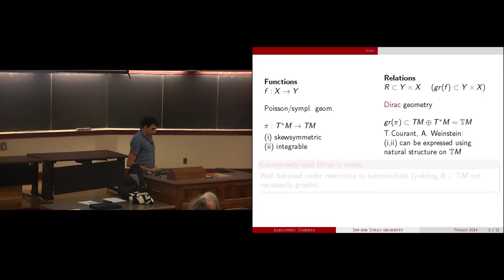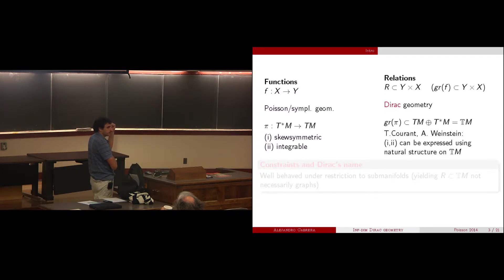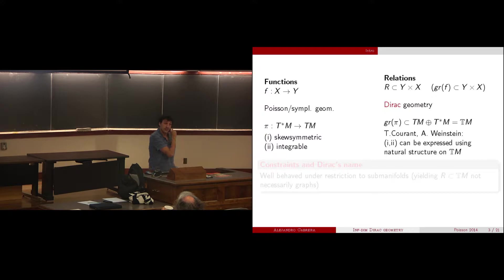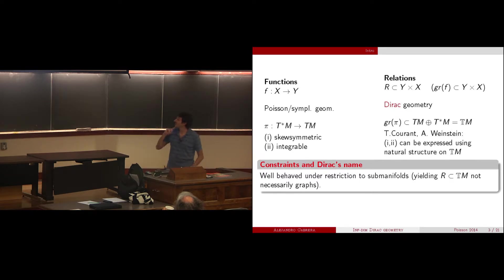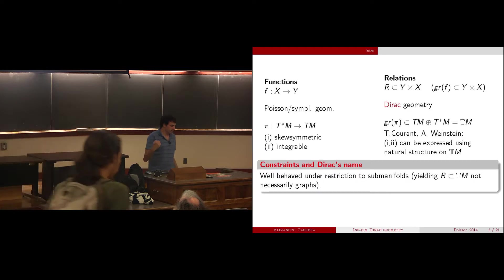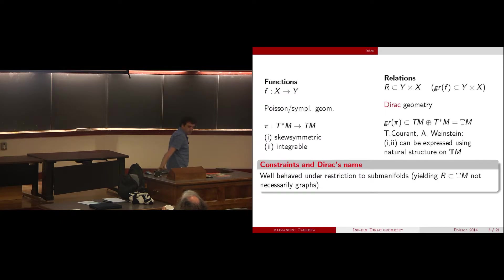It was noticed by Ted Courant and Alan Weinstein that if you think of the graph of this map, these two conditions can be expressed in terms of the graph as a subspace, as a subbundle. The ambient space T plus T-star, this double tangent bundle, has a natural structure that allows you to express these two conditions. The name Dirac is related to the fact that these are well-behaved under restriction to submanifolds, so constraints — a reference to Dirac's work on constraints.